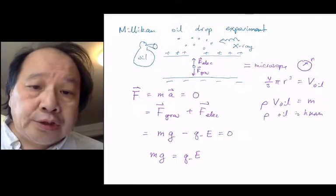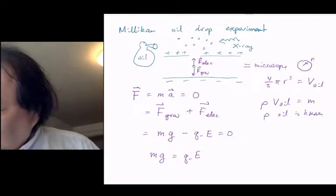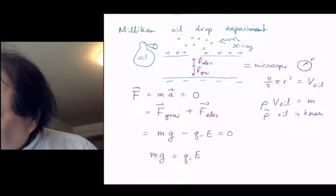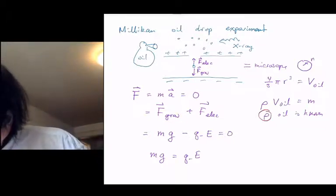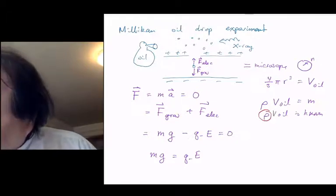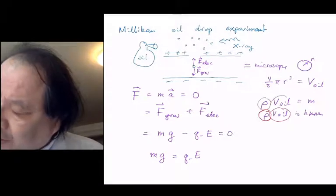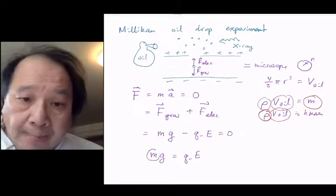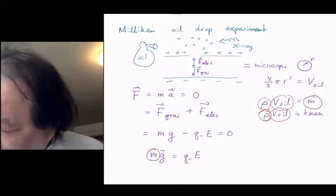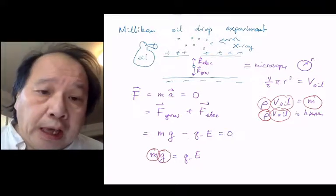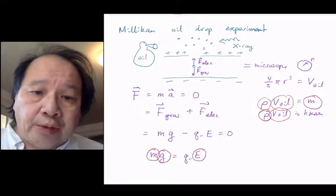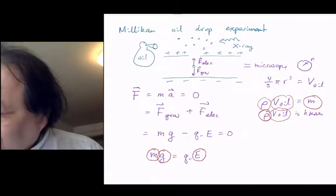This is the situation: he knew the density, he knew the volume of the oil. From density and the volume of the oil, he therefore knew the mass of the oil droplets. They of course knew the gravitational constant of the earth, and they knew their electric field. Therefore, he was able to determine the charge of the electron.